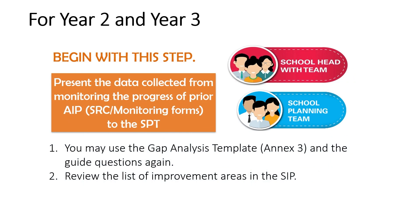For year two and three, begin with this step. If you are done with the first year, you present the data collected from the monitoring progress of prior AAP and the SPT. You may use the gap analysis template and the guide questions again, and review the list of improvement areas in the SIP. This is one of the major things that school heads should take note: the SPT is not something that should convene only in the first year. The process of continuous improvement should be done every year, or as frequently as possible, in order for you to really conduct school improvement. School improvement means continuous improvement — following the processes of reflection, assessing, planning, and acting based on feedback. In year two and three, reflect on the AAP you have done before and see if there are things you can improve.